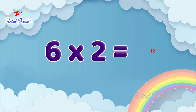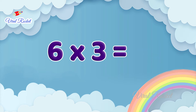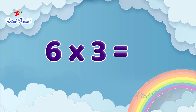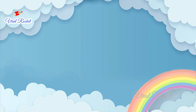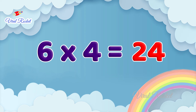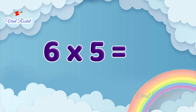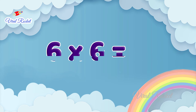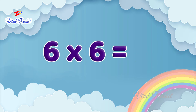Six twos are twelve. Six threes are eighteen. Six fours are twenty-four. Six fives are thirty. Six sixes are thirty-six.